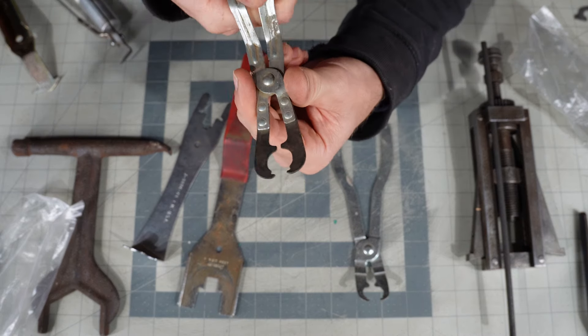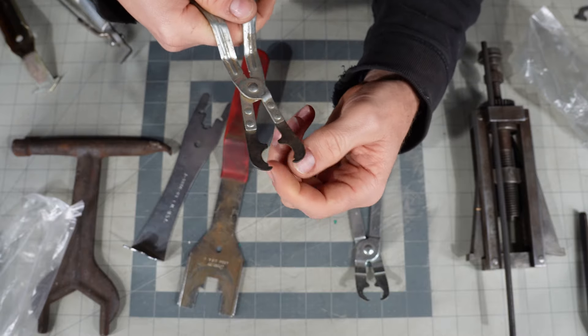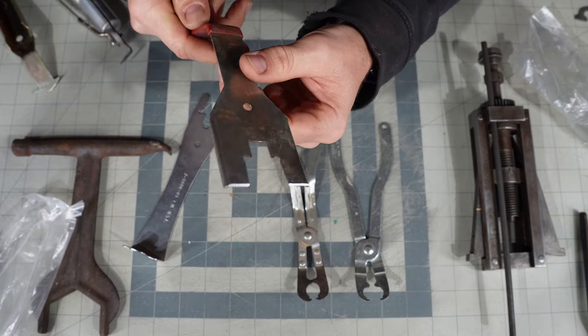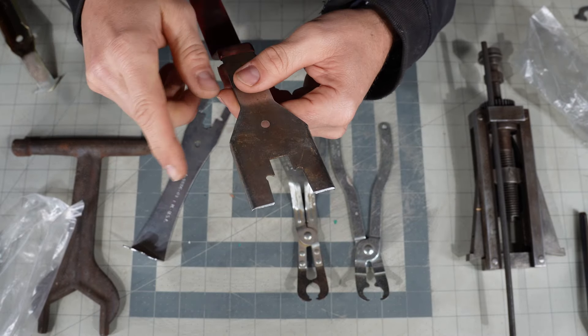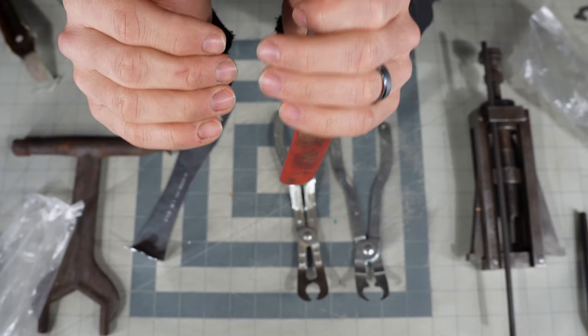So you can see how this style would be almost necessary to grab into that inset spring, whereas this style would be better suited for the springs that have the wrap around and it sticks out rather than just inboard.